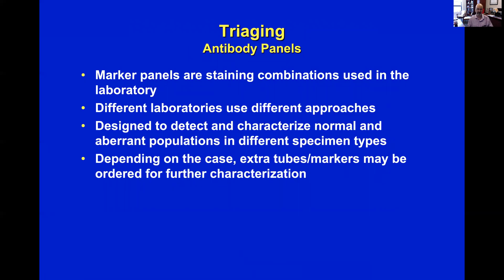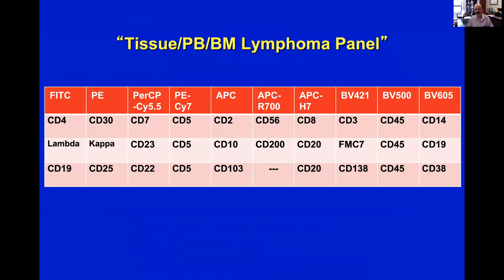Depending on the case, you can always order extra tubes if you have cells left so that an unsuspected population can be fully characterized. This is an example of a 10-color panel that we use for a tissue type where a lymphoma is suspected — a lymphoma panel. Just from the markers, you can probably guess that the first tube is focused on evaluation of T cells, their CD4 distribution, and any aberrancy in any of the markers. The other two tubes are focused on evaluation of B cells, where we'll try to find any monoclonal population and confirm whether it might be hairy cell leukemia based on some of those markers. We also have an isotypic control tube as discussed in video one. That's how panels are generally designed logically — what makes sense to put together to characterize the expected populations.